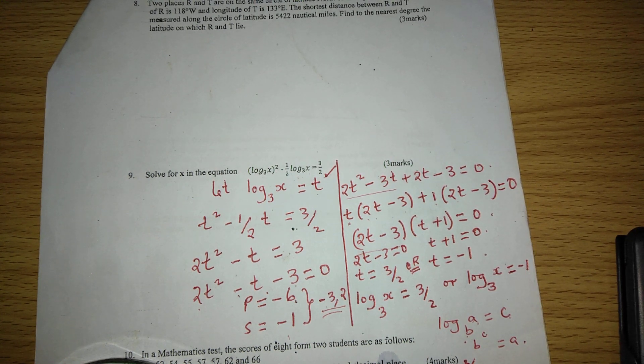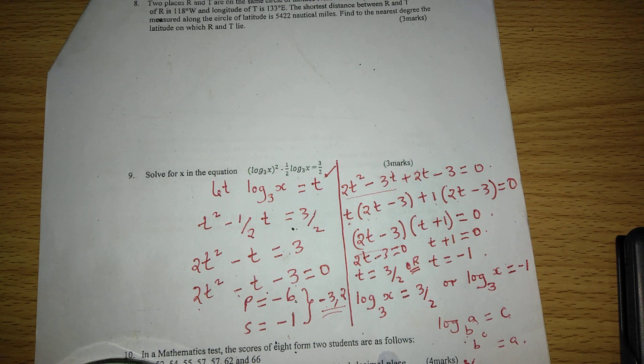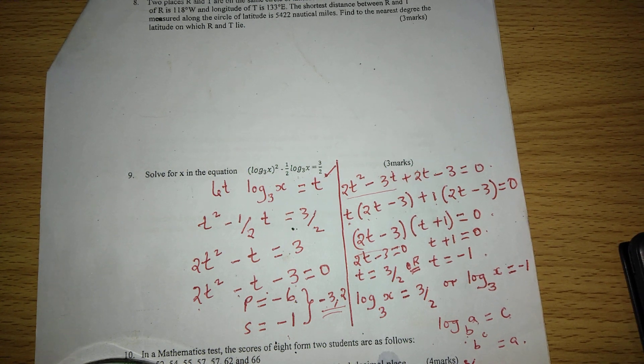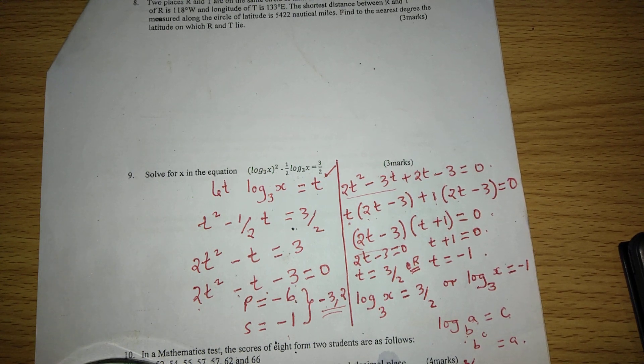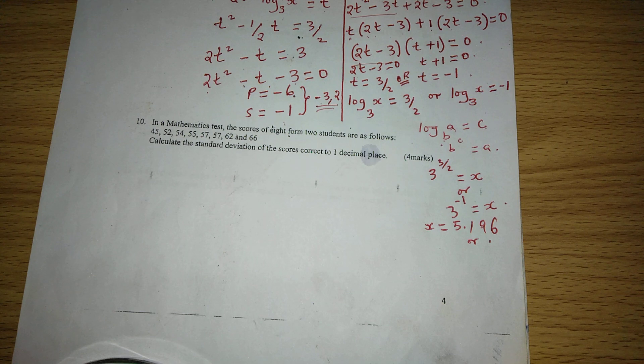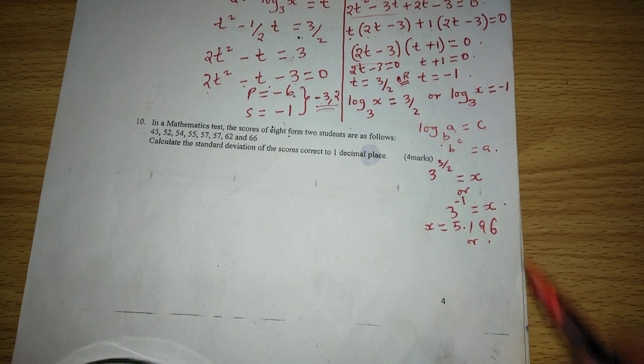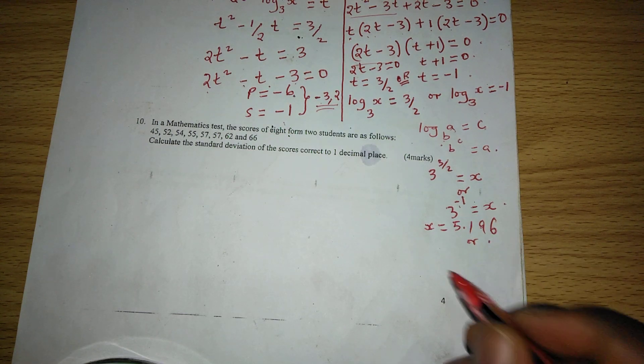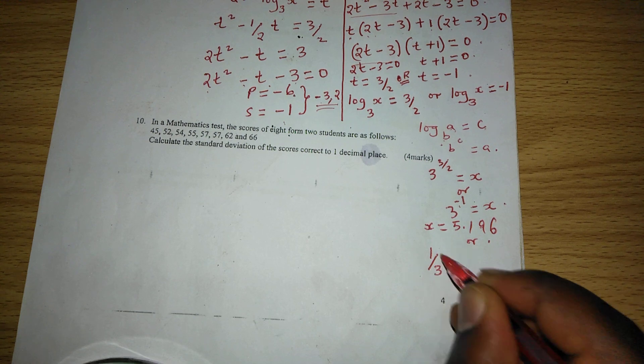When we raise 3 to the power of 3 over 2, which is 3 raised to 1.5, we get x is 5.196, or 3 raised to negative 1. Remember, 3 raised to negative 1 can mean this: according to the laws of indices, when the index is negative, we can take the reciprocal of the number.